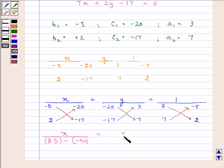Similarly, under Y also, minus 20 into 7 will give us minus 140 and subtract the product of minus 17 into 3, that is, minus 51.